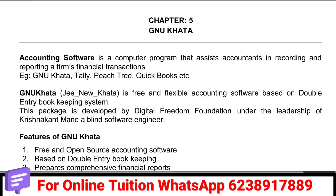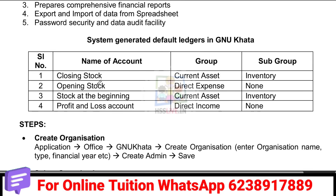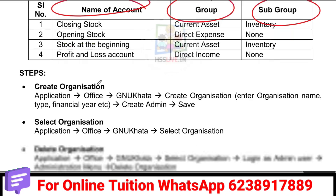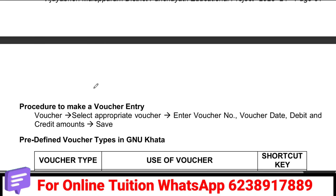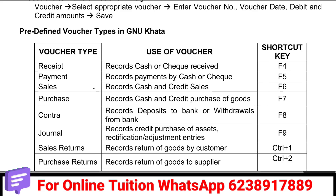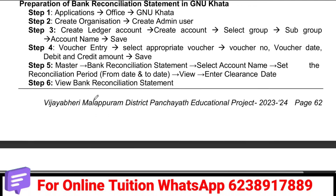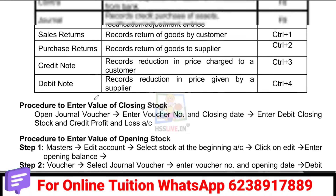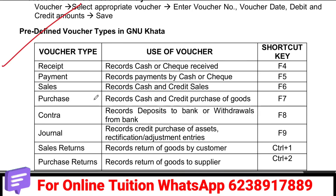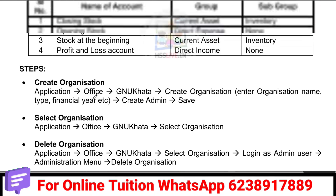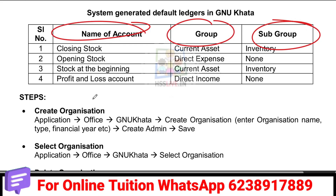In the next chapter we will learn about system-generated accounts and subgroups. We will learn how to create an organization, voucher types, and grouping. We are going to study groupings in detail.